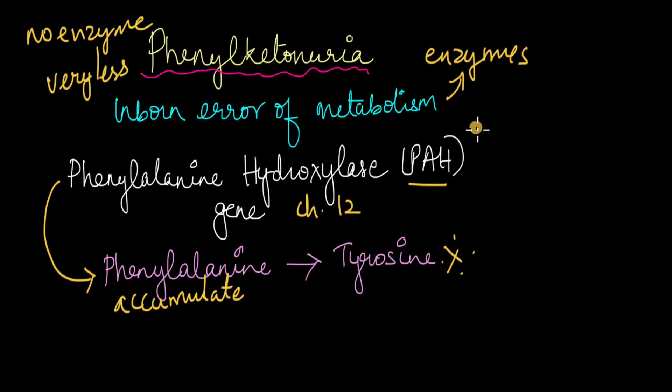This can cause problems like intellectual disability, a small head, seizures, and a musty odor to the sweat and urine. This is one of the diagnostic criteria for diagnosing phenylketonuria. A blood test will let us know whether that person has phenylketonuria, but also this musty smelling sweat and urine can be observed in a lot of people with phenylketonuria.